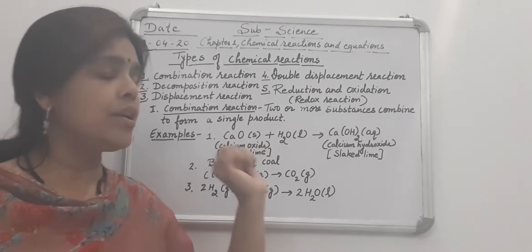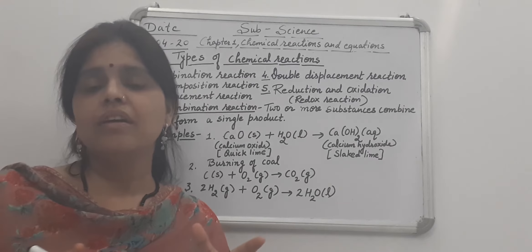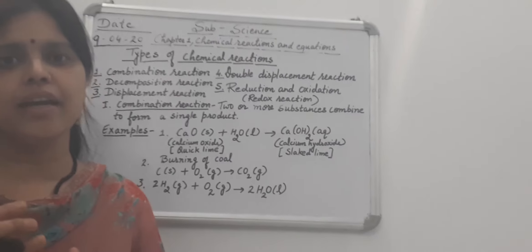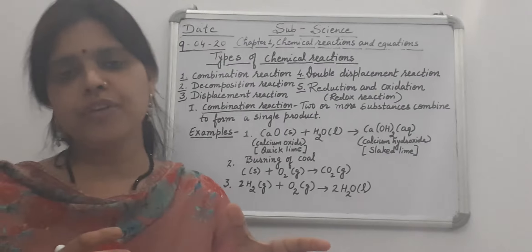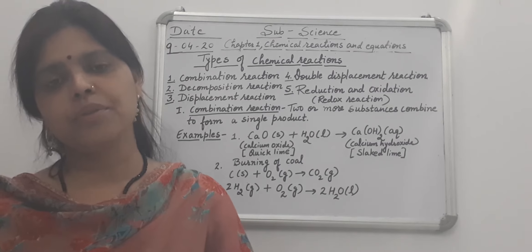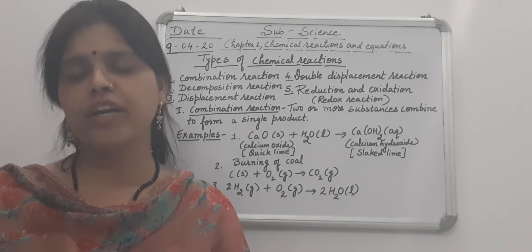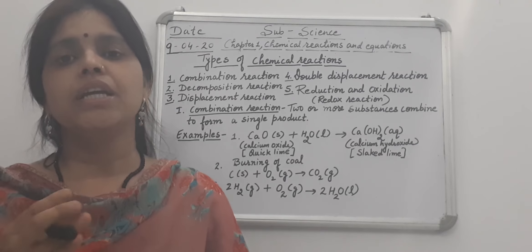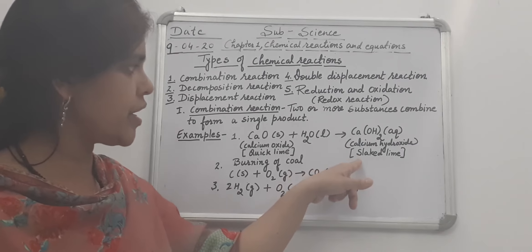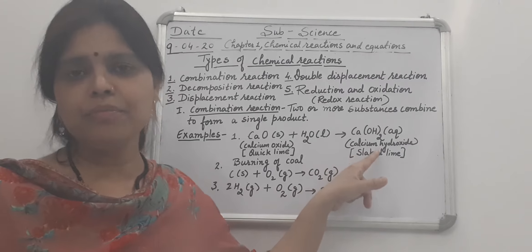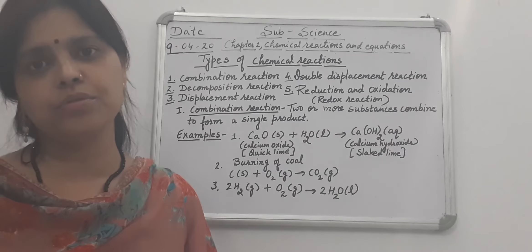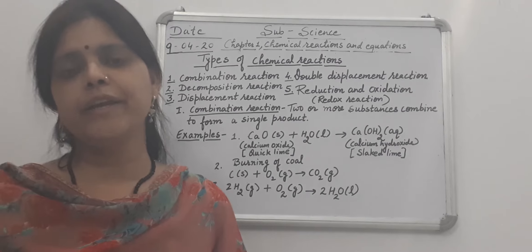This slaked lime — calcium hydroxide — when it reacts with carbon dioxide, it forms calcium carbonate (CaCO3). This is used for white finishing, that is whitewashing.